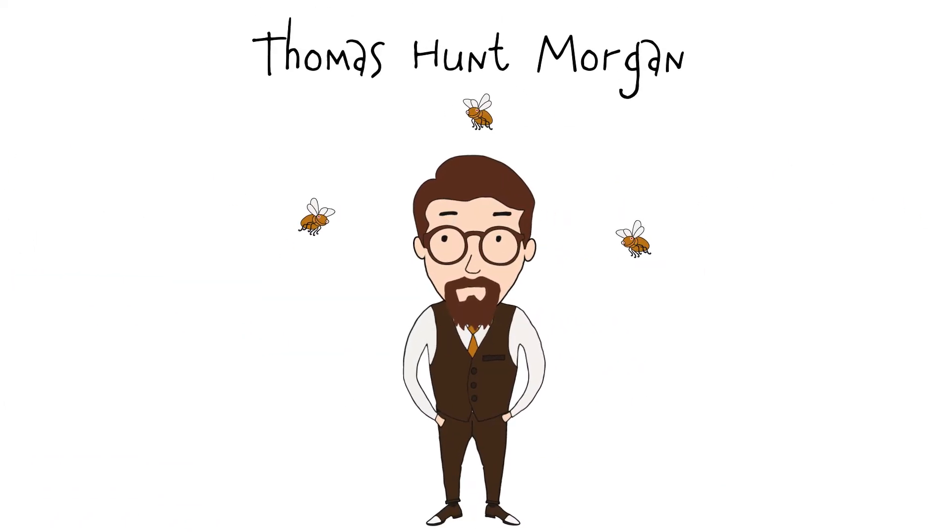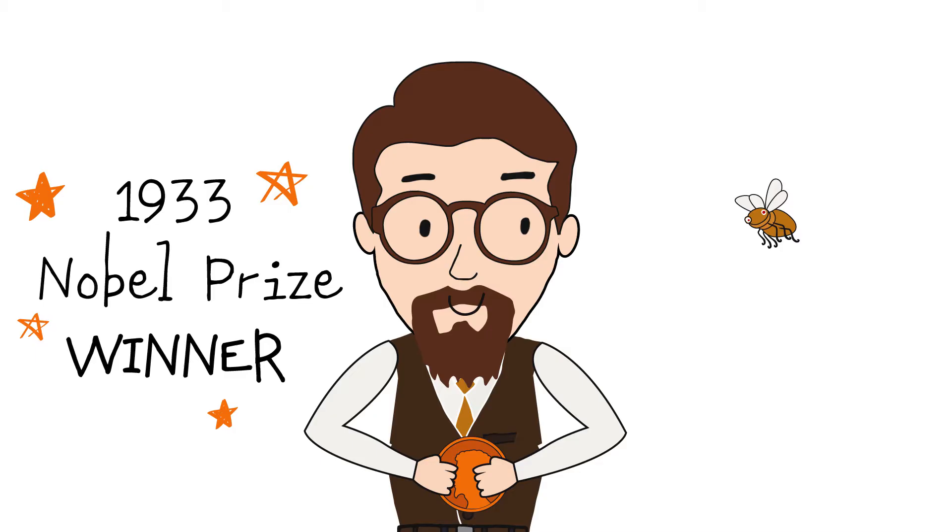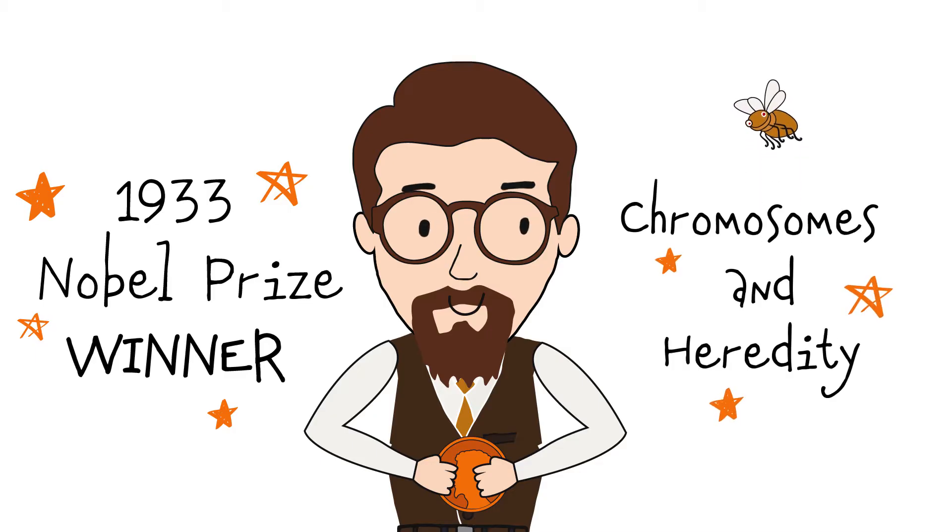It is named after Thomas Hunt Morgan, an American fruit fly geneticist who was awarded the Nobel Prize in 1933 for his work on chromosomes and heredity, but you don't need to know that.